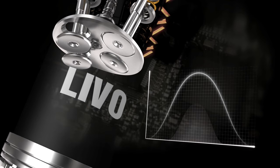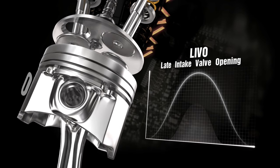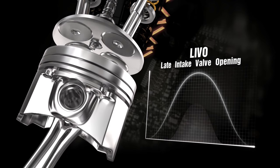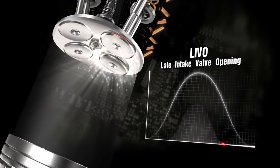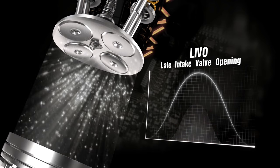At engine start-up and idling, LIVO, late intake valve opening, determines a higher speed air intake, thereby optimizing the mixture formed and its combustion.